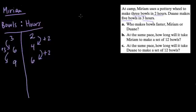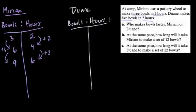What about Dwayne? We'll set the same kind of ratio table, the number of bowls for the number of hours. He's making five bowls in three hours.